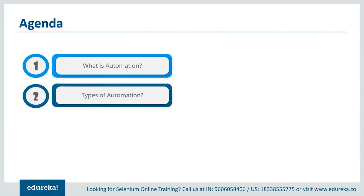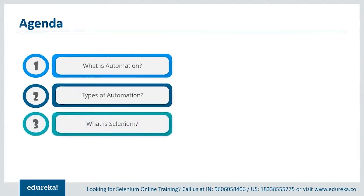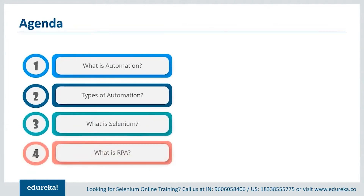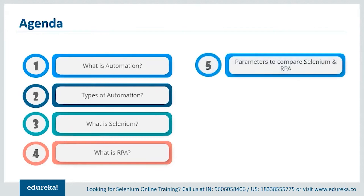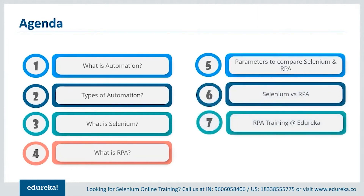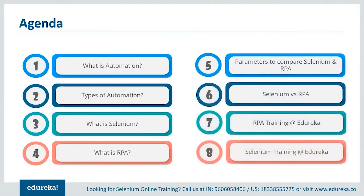First, we'll talk about the automation testing tool Selenium and learn its features. Once we're done with that, we'll take a look at the business process automation technology RPA and comprehend how it is used to automate repetitive tasks. Moving further, we'll discuss the parameters taken into consideration for comparing both Selenium and RPA and talk about the similarities between these tools. And finally, we'll wrap up this session by comparing them based on those parameters.